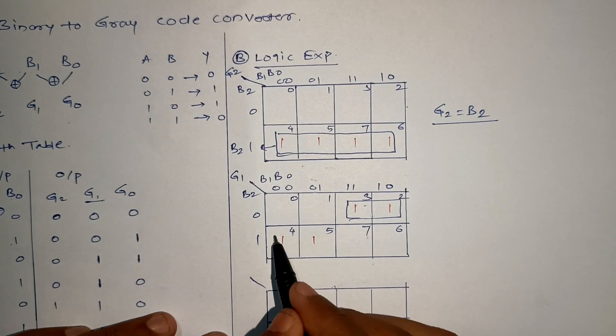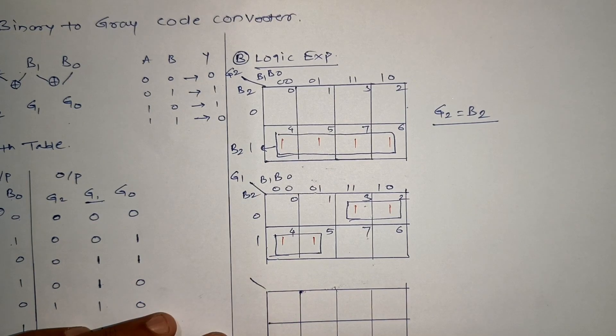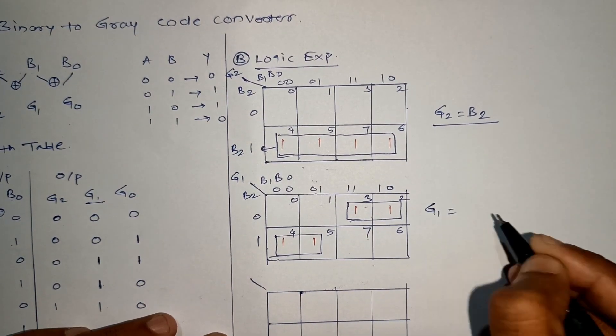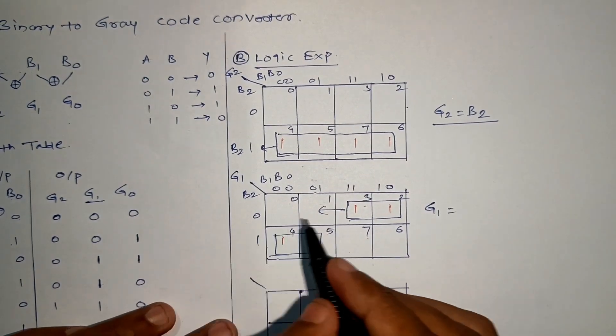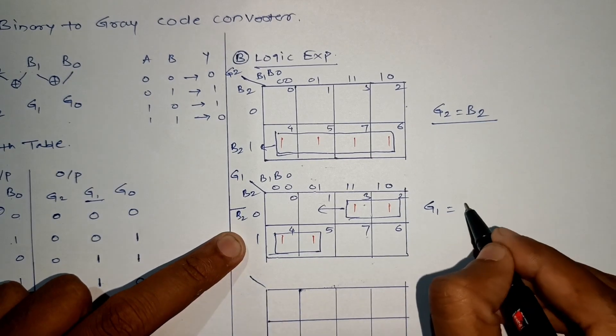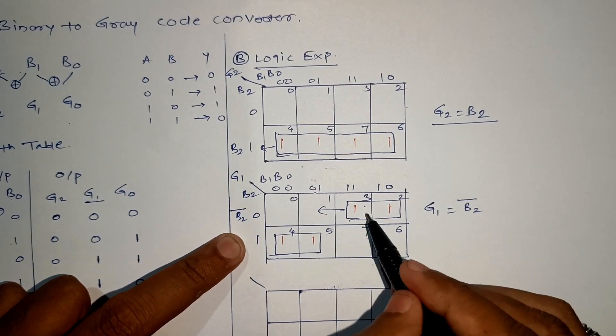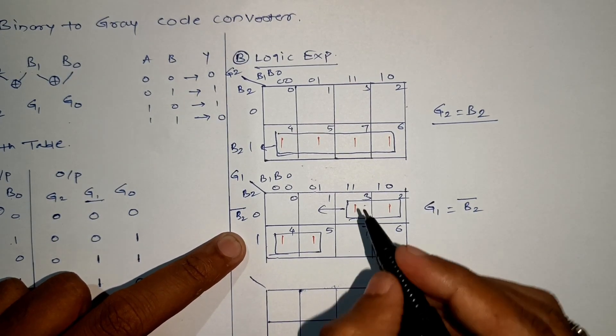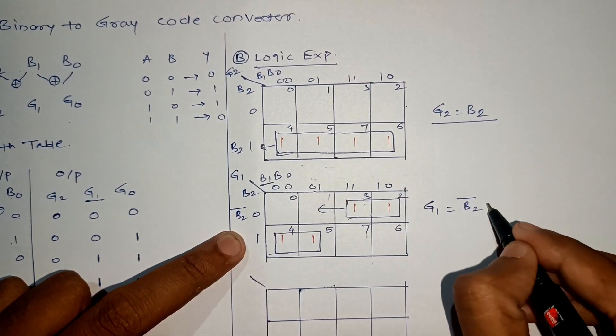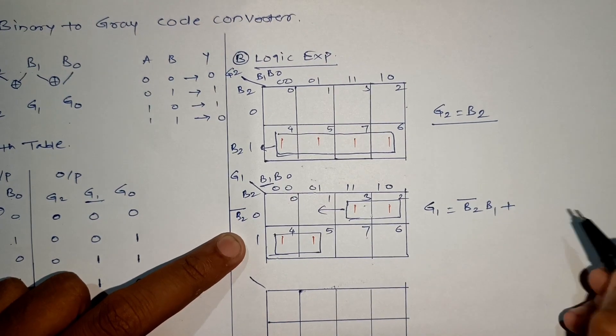2, 3 can form one pair, and 4, 5 can form another pair. So let's start writing the expression. For 2, 3, B2 is 0, so B2 bar, and B1 is 1, so B1. Plus, for 4, 5, B2 is 1, so B2, and B1 is 0, so B1 bar.